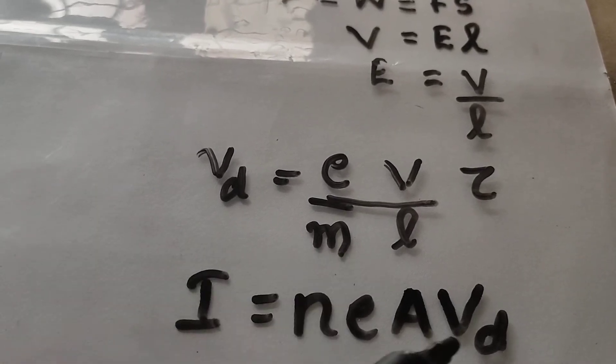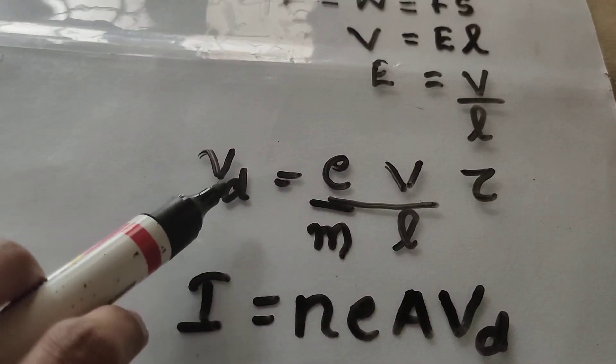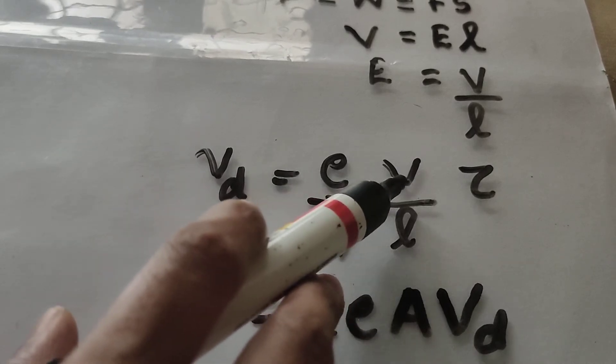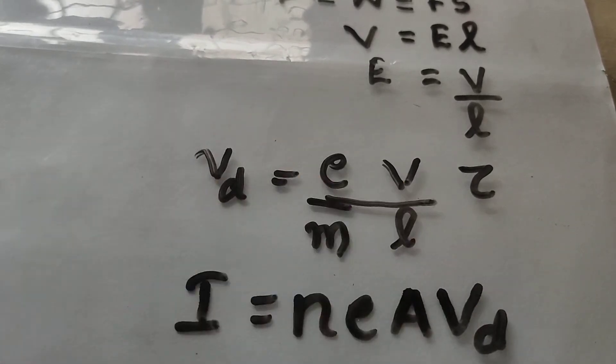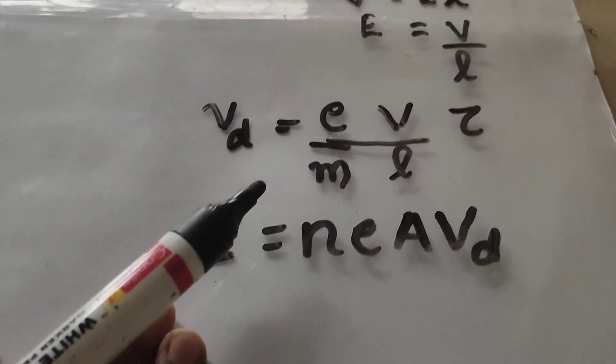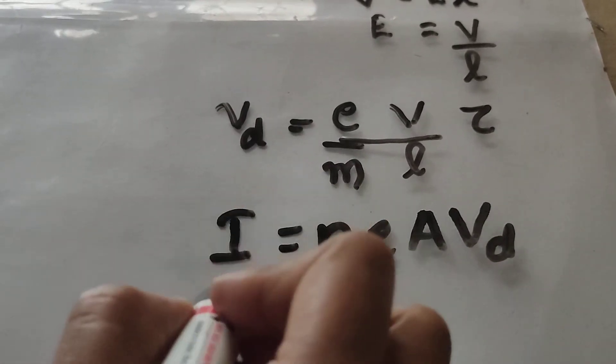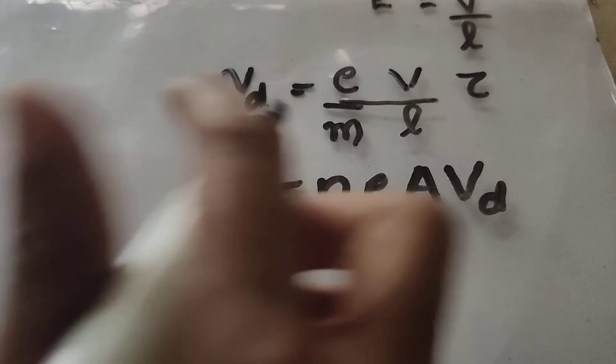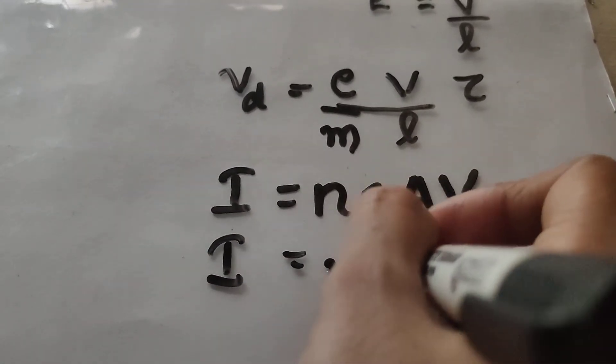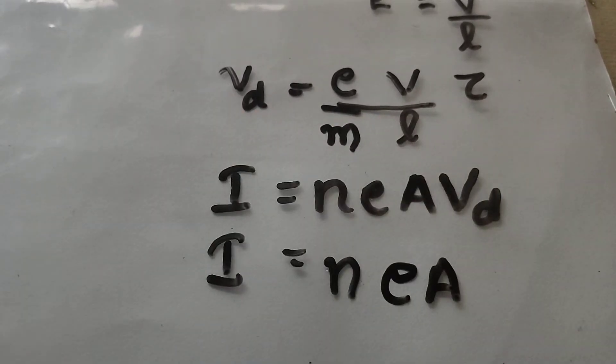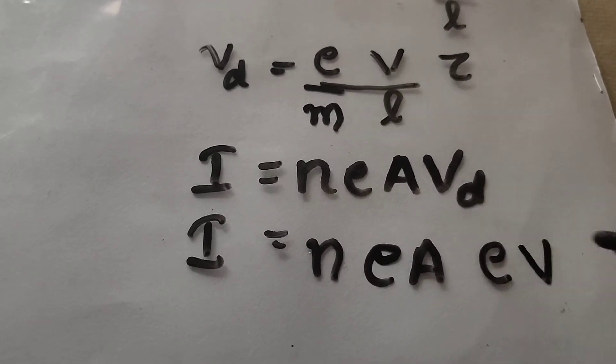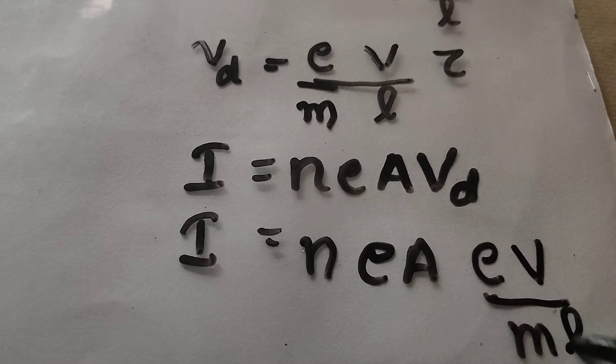And in this equation, we can substitute this equation for drift velocity. Drift velocity is e V by mL into tau where capital V denotes the potential difference. So, substitute this equation here. So, electric current I will become I is equal to N, e, A, what is Vd? Vd is eV by mL into tau.